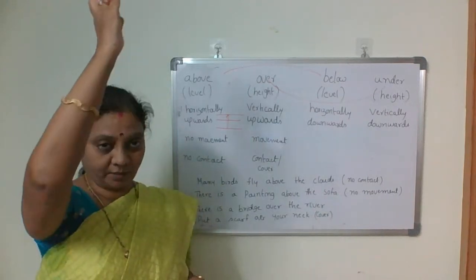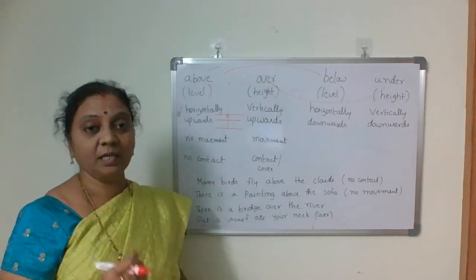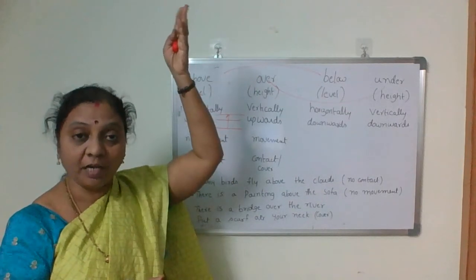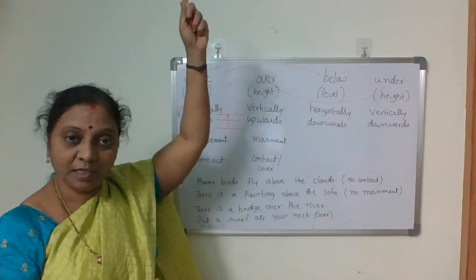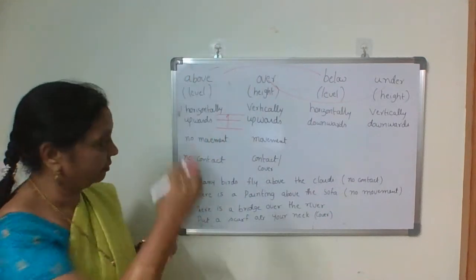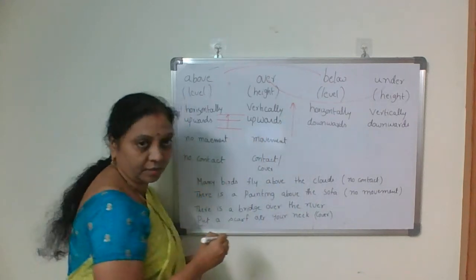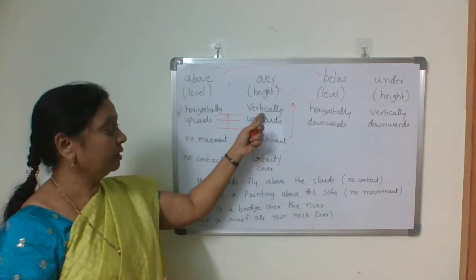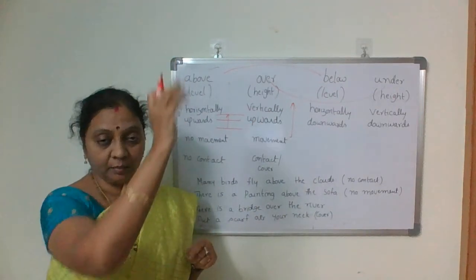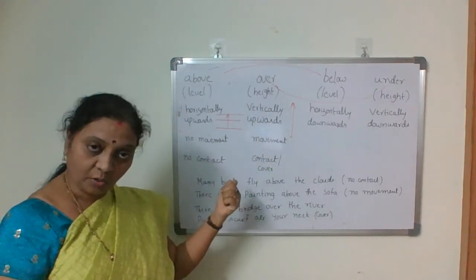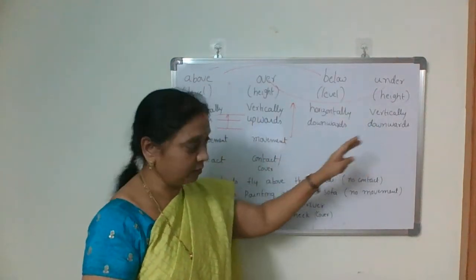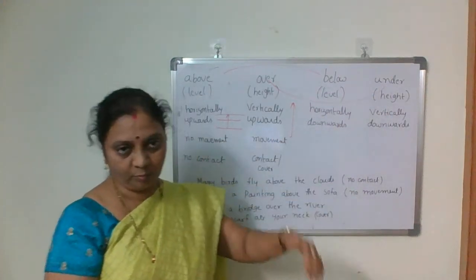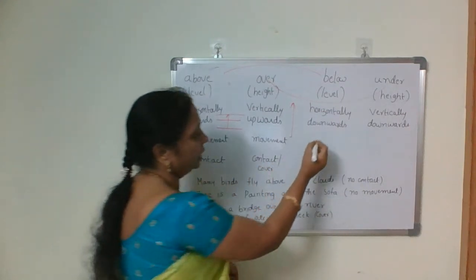'Over' talks about height — vertically upwards. Similarly, 'below' and 'under' also: 'below' is horizontally downwards and 'under' is vertically downwards.